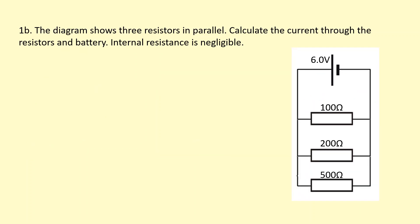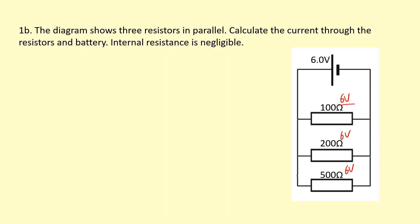This is the same circuit as before, except I've added an extra resistor — the 500 ohm resistor in parallel. So the voltage across this is still 6 volts, 6 volts, and across this is also 6 volts. Because the voltage and resistance of these two haven't changed, the current through that is the same — still 0.06 amps. The current through this is also still the same: 0.03 amps.